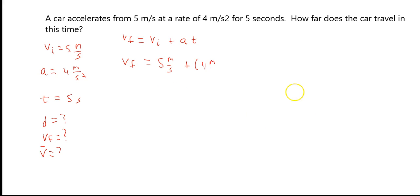5 meters per second plus 4 meters per second squared times 5 seconds. Now we find for our final velocity, 25 meters per second.